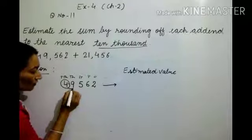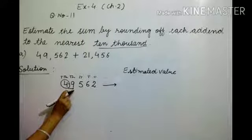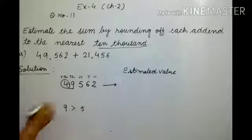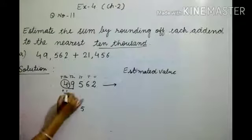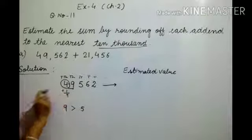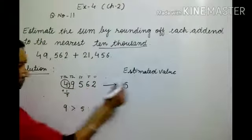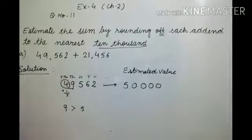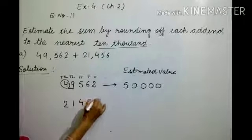Go to the right of the circled digit. The first digit to the right of four is nine. Compare nine with five — nine is greater than five, so we add one to the circled digit. The ten-thousands place digit is four, so four plus one is five. Write five, and the remaining four digits turn to zero. So 49,562 rounded to the nearest ten thousand is 50,000. Now take the second number, 21,456.